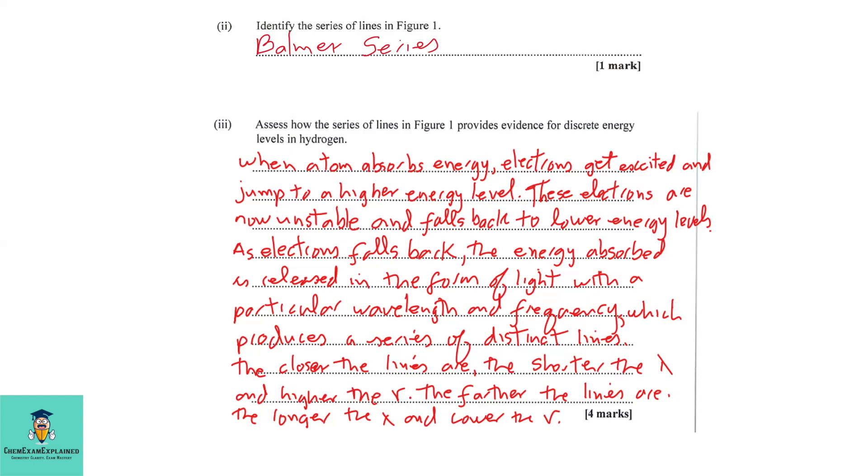These electrons are now unstable and fall back to the lower energy level. As electrons fall back, the energy absorbed is released in the form of light with a particular wavelength and frequency which produces a series of distinct lines.